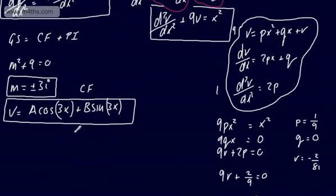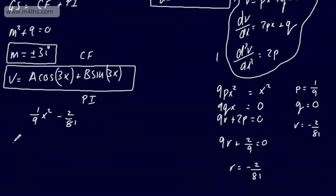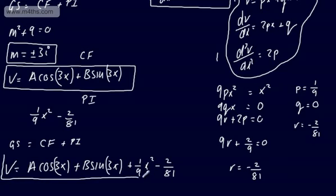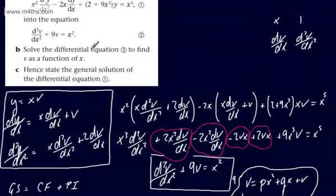The particular integral is (1/9)x² − 2/81. The general solution — complementary function plus particular integral — is therefore v = A cos(3x) + B sin(3x) + (1/9)x² − 2/81. This expresses v as a function of x, which is what was required for equation 2.